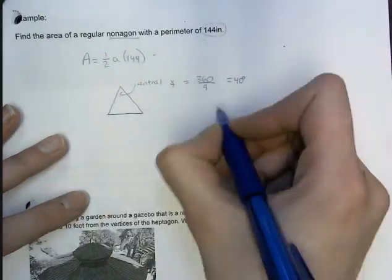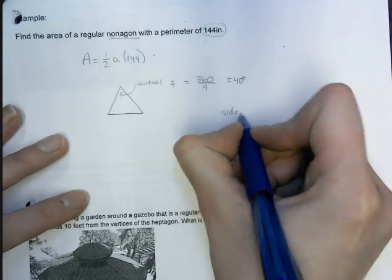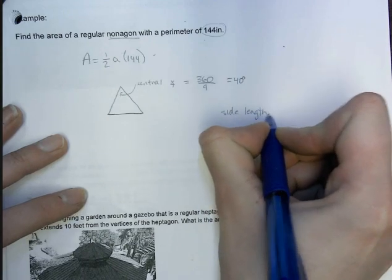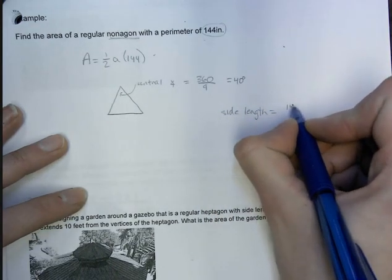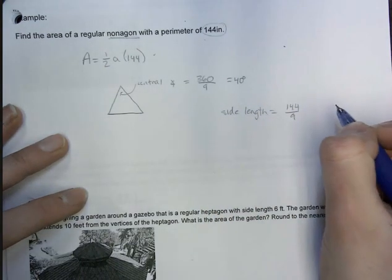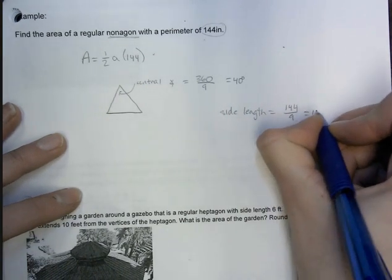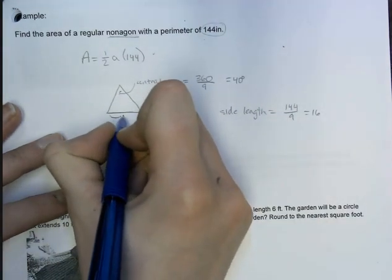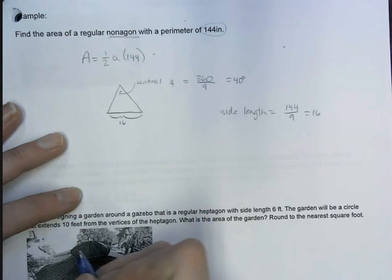So what is each side then? Well, if there are nine sides, one side length is equal to 144 divided by nine, which we get 16 when we do that. So then I know that each side length of one triangle is 16.